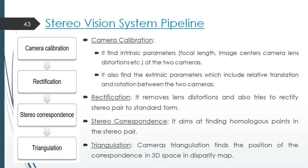In stereo setup, we also need to determine the orientation of camera 2 relative to camera 1. Rectification. By standard, it removes the lens distortion and also tries to rectify stereo pair to standard form. By standard form, we mean the epipolar lines in the two images are made parallel.